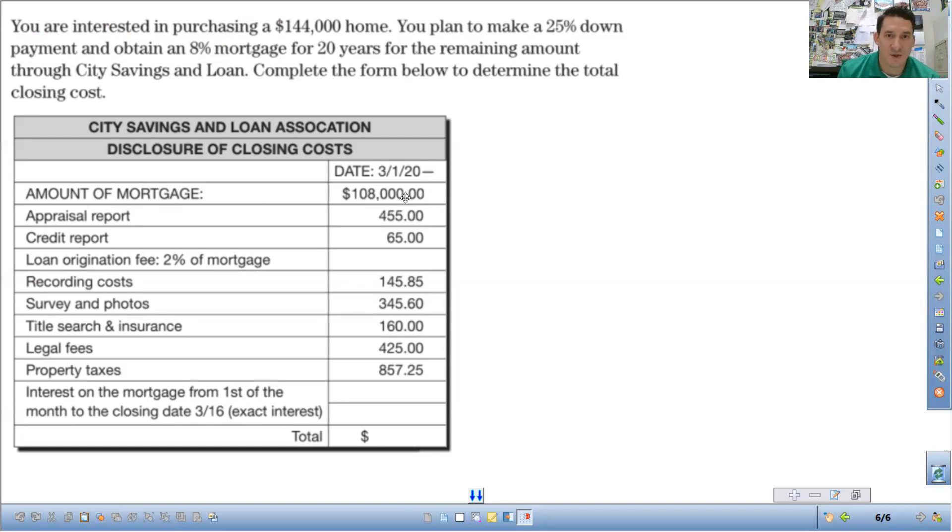So closing costs. So the amount of mortgage is $108,000. That is not part of the closing costs. Everything down here is part of the closing costs. So the appraisal report, what an appraisal is, is when we'll come in and evaluate the home to determine how much it is worth.